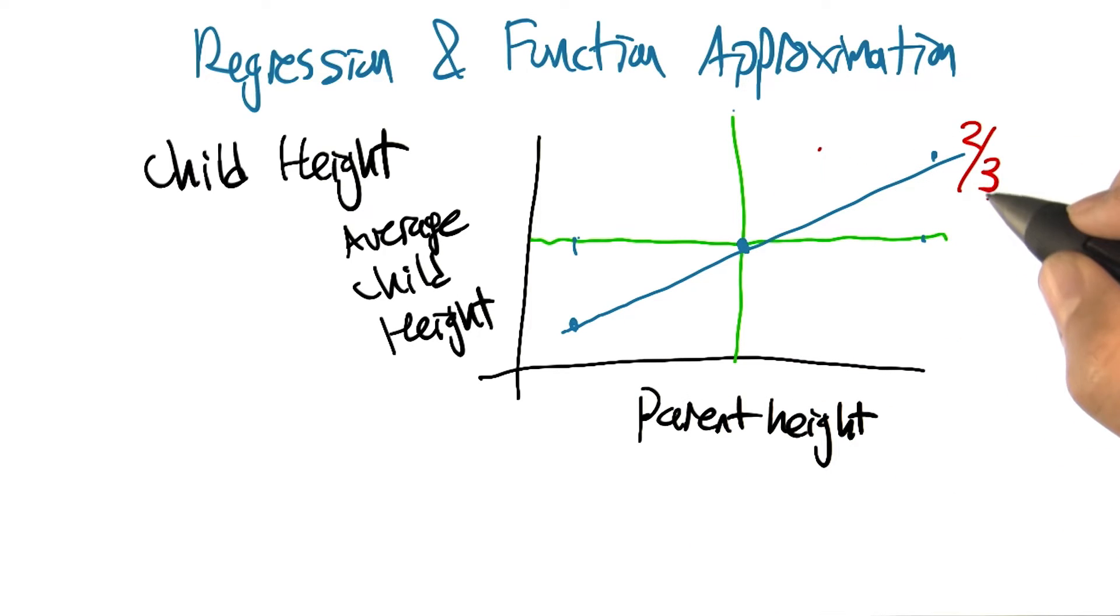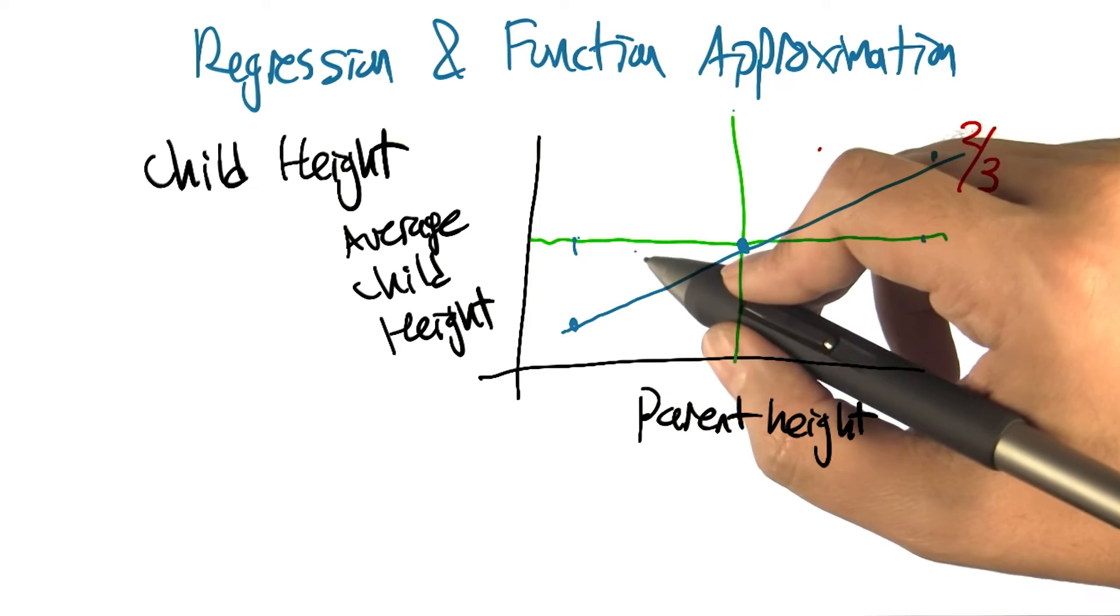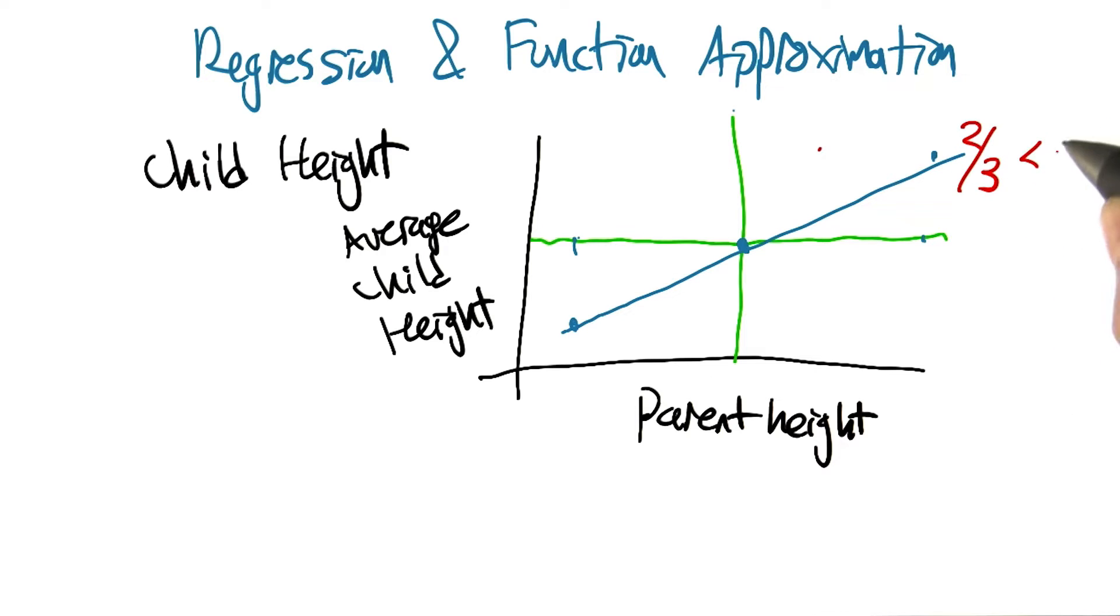And so, but if the slope is less than one, like it turns out to be in real populations, then what's happening is the children are a little shorter than the parents. Children of tall parents are shorter than they are, and the children of short parents are taller than they are. And the fact that this is less than one is what makes it regression to the mean.